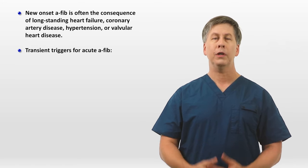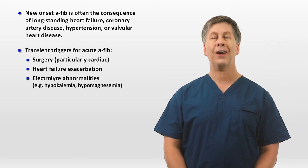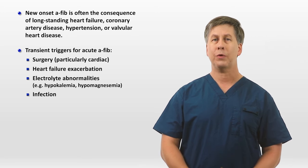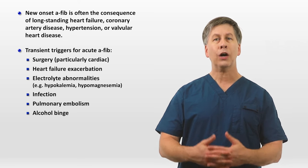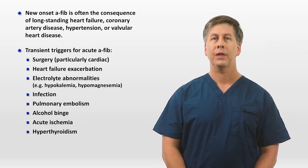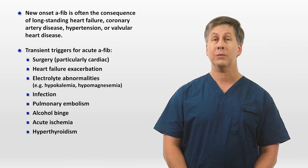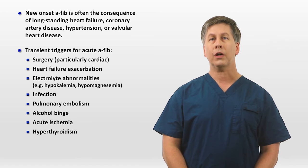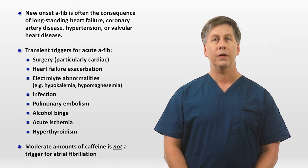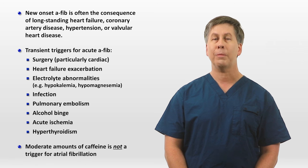Transient triggers for acute AFib include surgery (particularly cardiac surgery), a heart failure exacerbation, hypokalemia and hypomagnesemia, any infection (though anecdotally pneumonia may be the infection most associated with AFib), a pulmonary embolism, an acute alcohol binge, acute ischemia (though relatively uncommon), and hyperthyroidism. AFib from hyperthyroidism usually — but not always — is associated with other hyperthyroid symptoms. Despite widespread belief to the contrary, moderate amounts of caffeine intake such as a few cups of coffee is not a trigger for AFib. In fact, evidence has shown that moderate caffeine may actually be protective against the development of AFib long term.